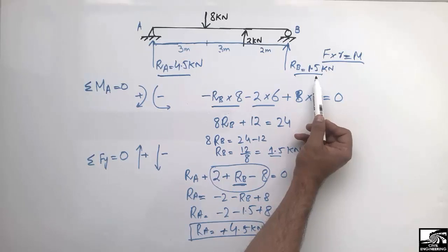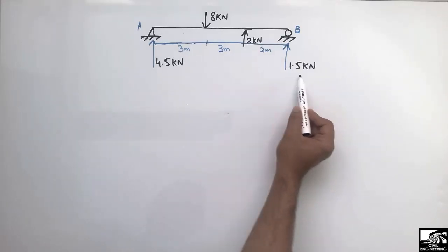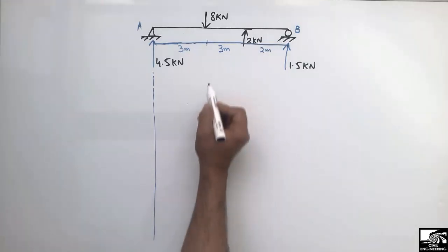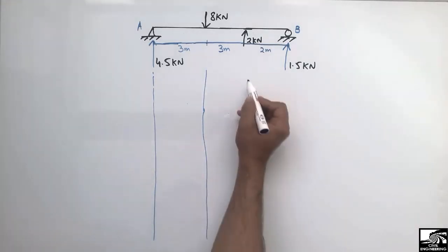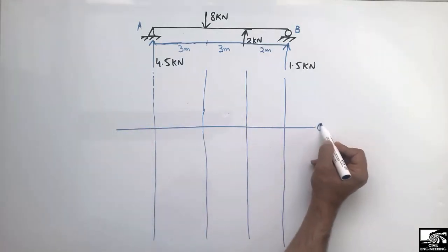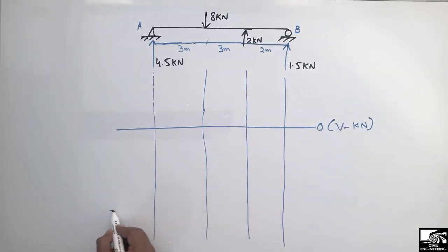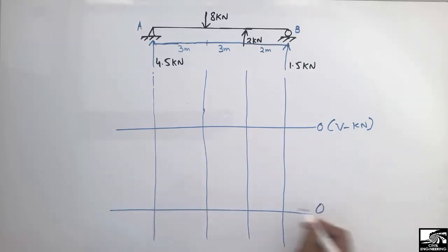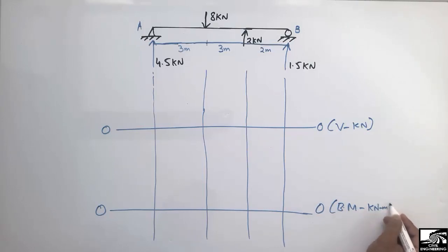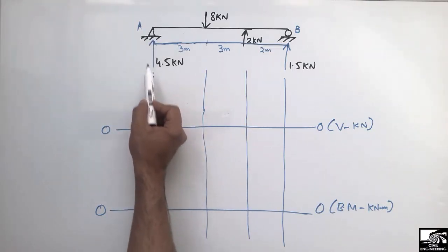With the support reactions RA = 4.5 kN and RB = 1.5 kN, we can now draw the shear force and bending moment diagrams. We draw reference lines — a zero-zero reference line for the shear force diagram in units of kilonewtons, and a zero-zero reference line for the bending moment diagram in units of kilonewton-meters.